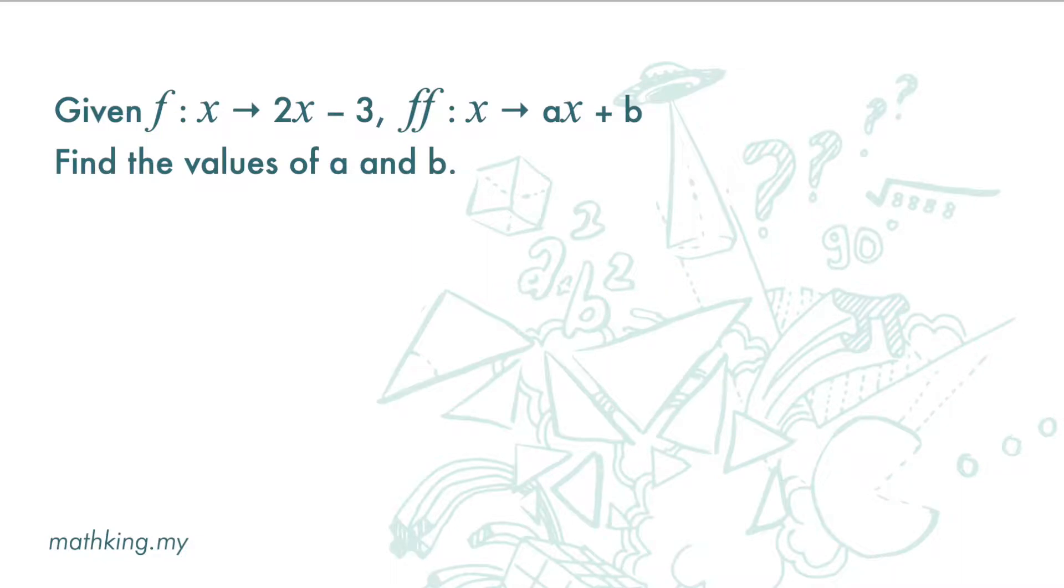Given f maps x to 2x minus 3 and ff maps x to ax plus b, find the values of a and b.